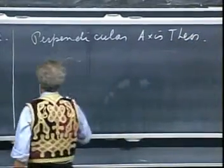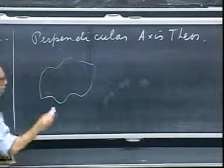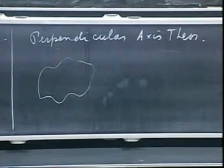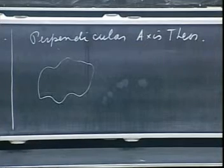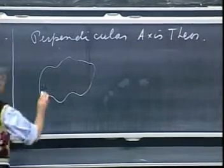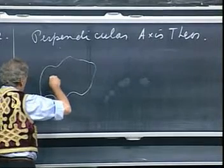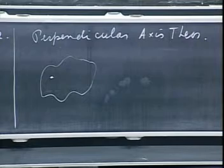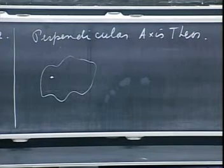If you have some kind of a crazy object, which, of course, we will never give you, we always give you a square or we give you a disk, but it has to be a thin plate, otherwise the perpendicular axis theorem doesn't work. And suppose I'm rotating it about an axis perpendicular to the blackboard through that point. I call that the z-axis. It's sticking out to you. That's the positive z-axis.